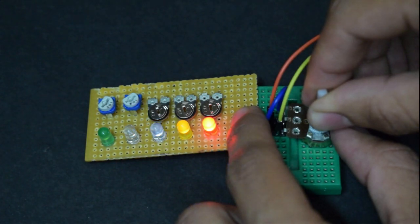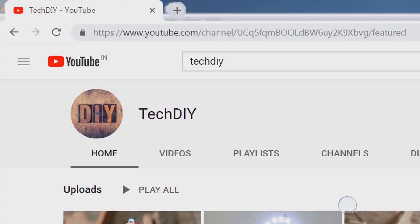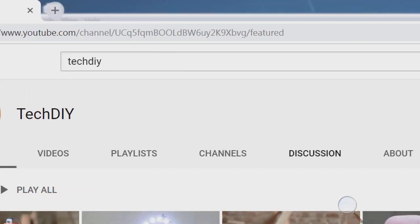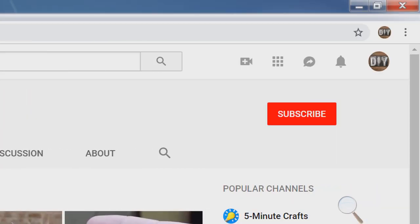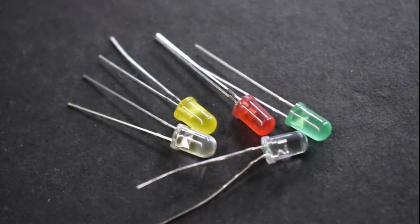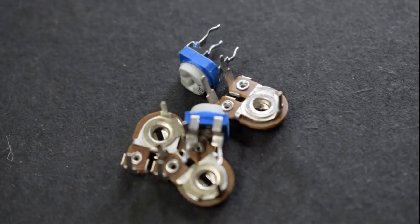But first, if you are new here, then make sure to subscribe to my channel and press the bell icon. Now we will need just a few components to make the indicator: some LEDs and presets of any value.